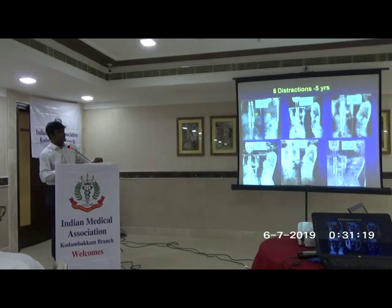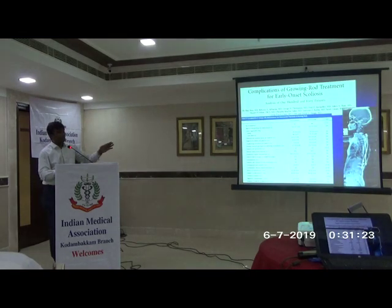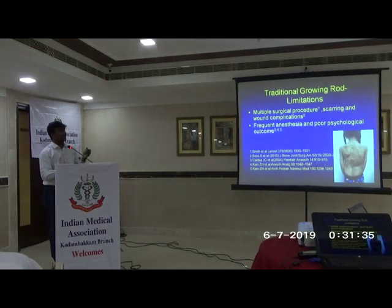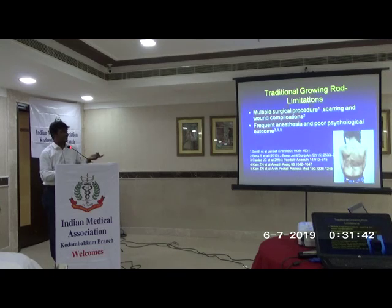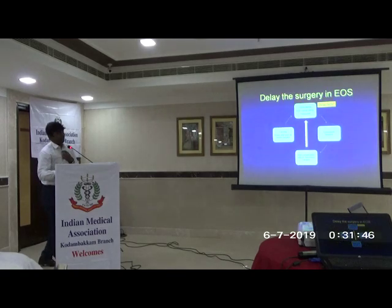However, the complication rates are high because screws are placed in a small child whose spine is still growing. There is a lot of stress at the implant-bone interface, so screw pullout and rod breakage are more common. Also, every 6 months the patient has to undergo surgery, which is a psychological trauma in addition to anesthesia complications. These are the main problems with growing rods.